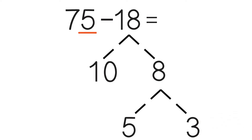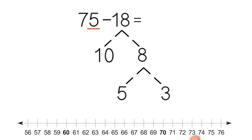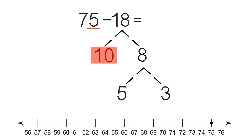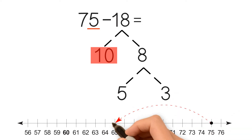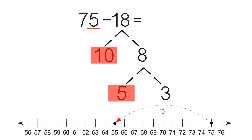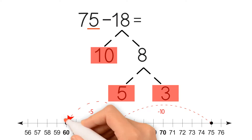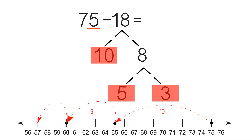Then we take our number line and we subtract 75 minus 10. 75 minus 10 is equal to 65. Then we take the second number: 65 minus 5 is equal to 60. Lastly, we take our last number, which is 3, and we do 60 minus 3, which is 57. Our answer is 57. 75 minus 18 is equal to 57.